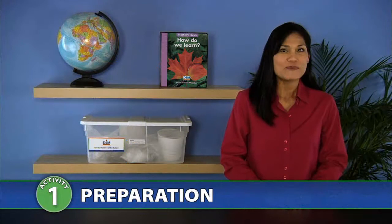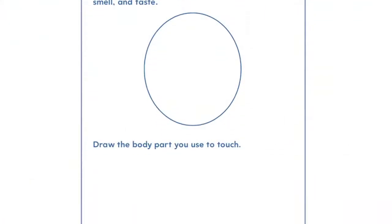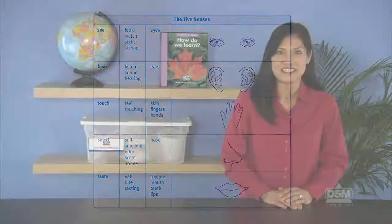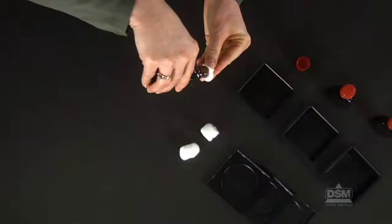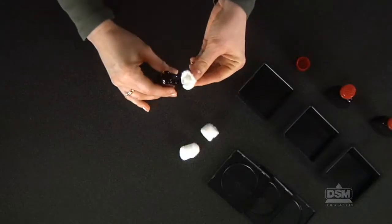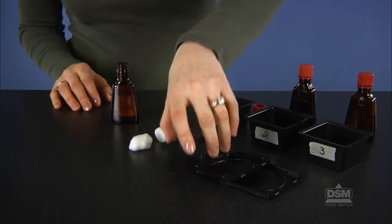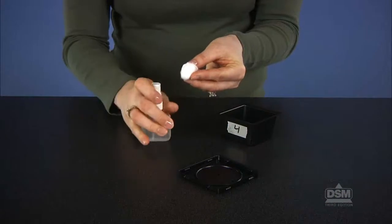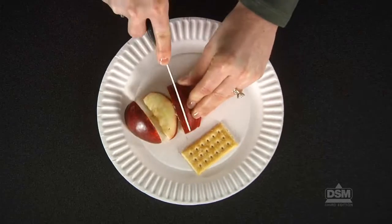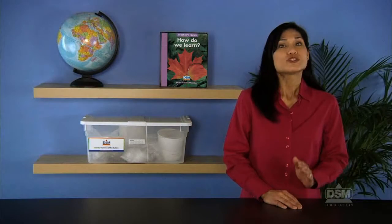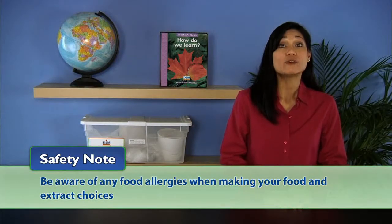To prepare for session two, make a copy of activity sheet one for each student and post the body and senses poster where all students can easily see it. Prepare four odor boxes: use masking tape and a marker to label boxes one through four. Put about ten drops of a food extract on a cotton ball, place it in odor box one, and cover with the lid. Repeat with two other extracts for boxes two and three. For the fourth box, use a cotton ball dabbed with floral scented perfume or shampoo. Prepare a small paper plate with a cracker and piece of fruit for each student. Be sure you are aware of any food allergies when making your food and extract choices.